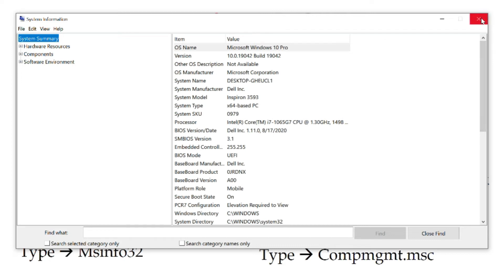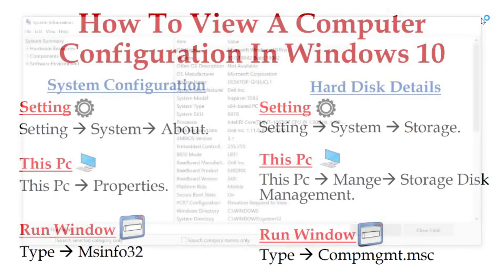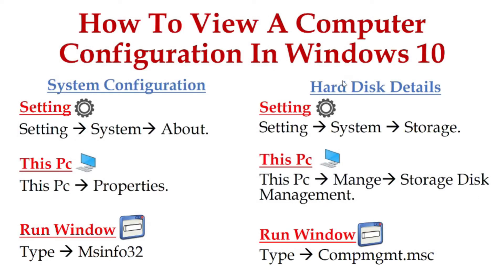Next is how to view the hard disk details. In system configurations you can see many things, but how to check your hard disk specifically — it's very simple. Again, there are three ways.